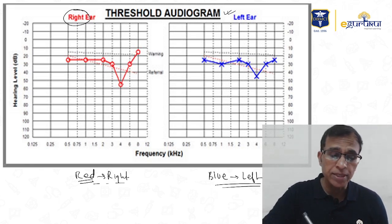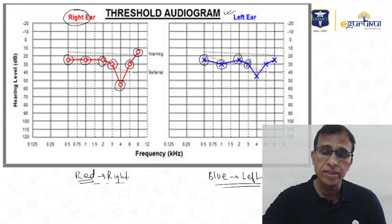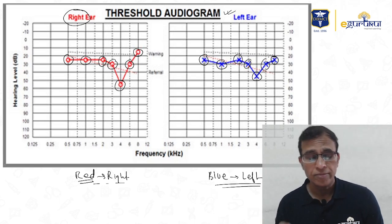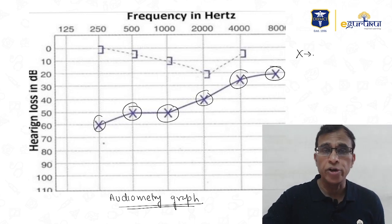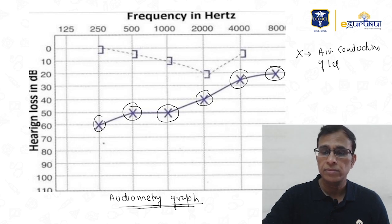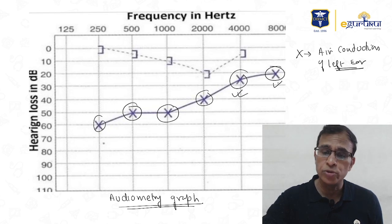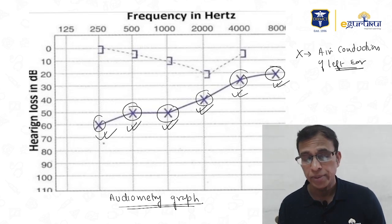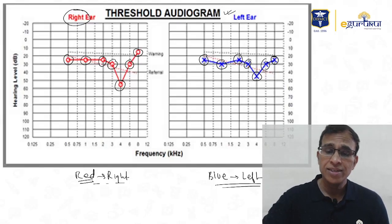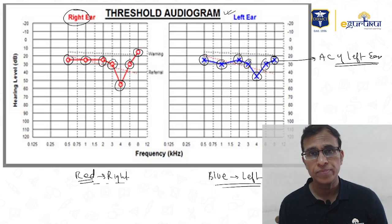If you look at the symbol — circles represent air conduction of the right ear, while X (cross) represents air conduction of the left ear. So this graph with blue color and X symbols is showing you the air conduction of the left ear. These are important features of audiograms that you must be able to recognize.